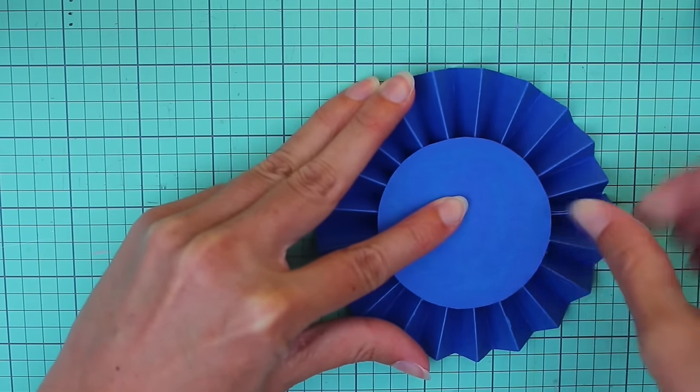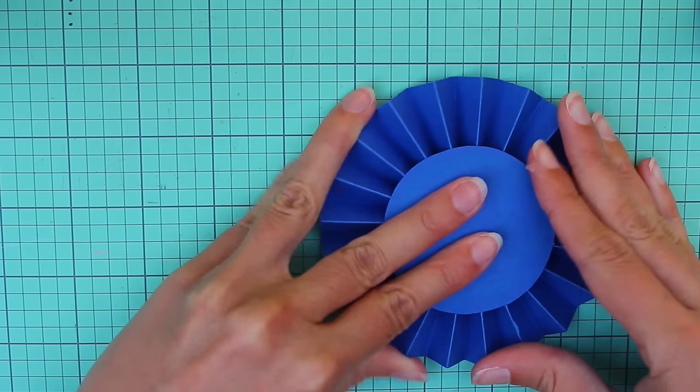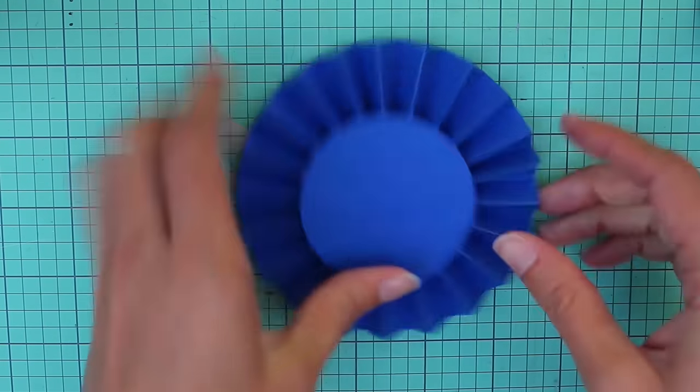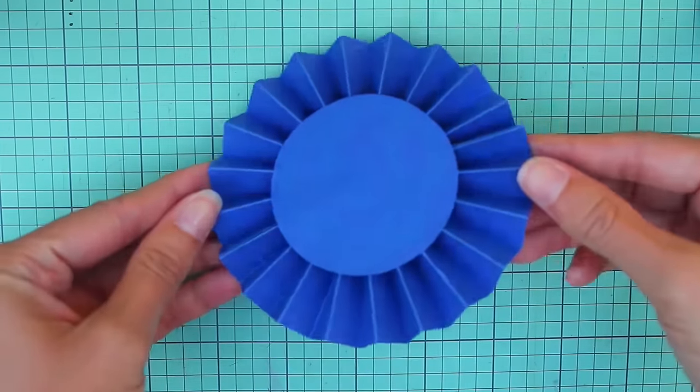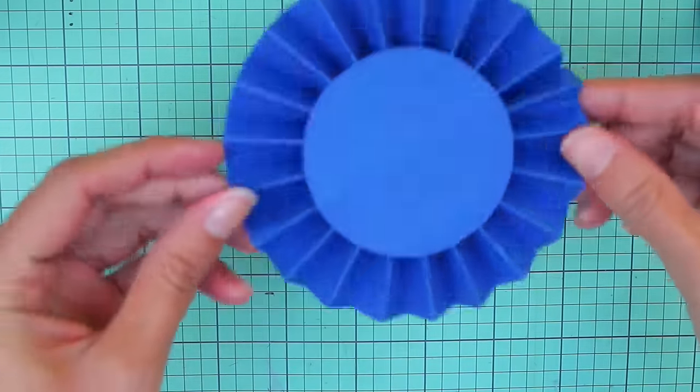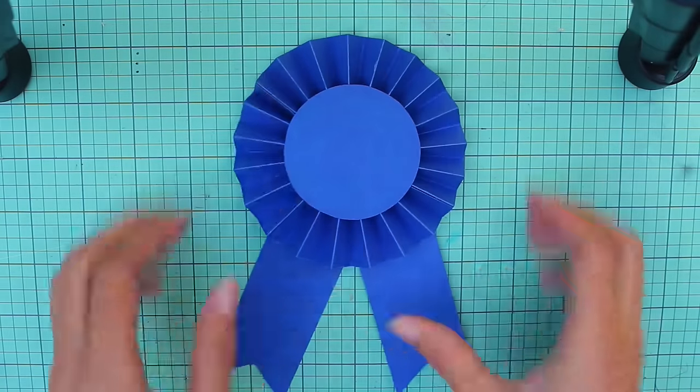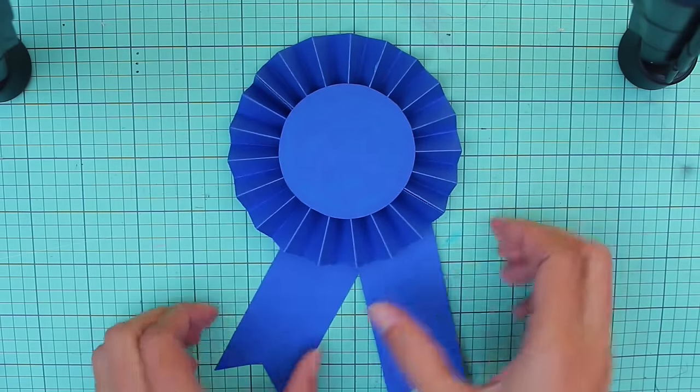Press that in place. Make sure everything is well attached and it looks like this at this point. Now we just need to add these two bottom ribbons.